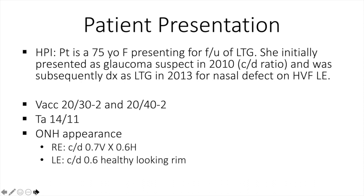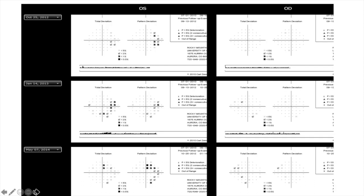The last patient is a 75-year-old female presenting for follow-up of LTG. She initially presented as a glaucoma suspect in 2010 due to increased cup-to-disc ratio and was subsequently diagnosed as LTG in 2013 for nasal defects on the upper visual field on the left side. Visual acuity is 20/30 on the right and 20/40 on the left. Pressure is 14 on the right and 11 on the left. The optic nerve showed increased vertical cupping on the right side with 0.6 cup-to-disc ratio vertical and horizontal on the left side with healthy-looking rims. Between 2012 and 2014, there is an increase in the visual field depression seen nasally on the left side.